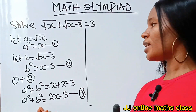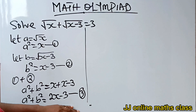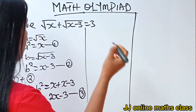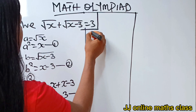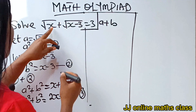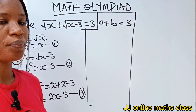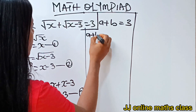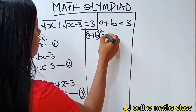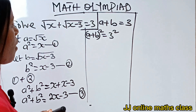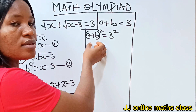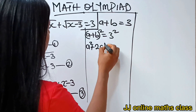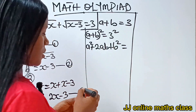Now, recall that we said a = √x and b = √(x − 3), which means a + b = 3. If we square both sides of this equation, we get (a + b)² = 3². Using the algebraic identity to expand, we get a² + 2ab + b² = 9.